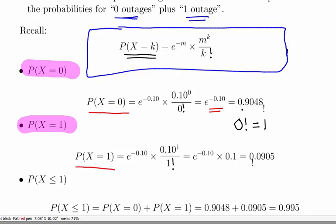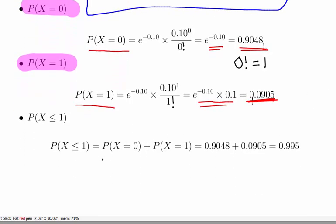Similarly, the probability of X equals 1 is e to the power of minus 0.10 times 0.10 to the power of 1 over 1 factorial. That equals the previous exponential value times 0.1, which equals 0.0905.